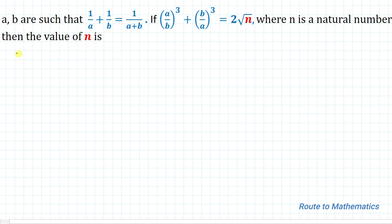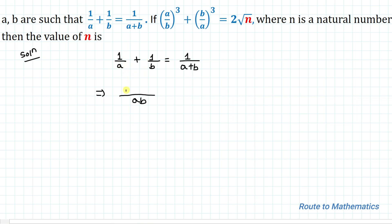So we are asked to find the value of n from the given equation. Without any delay, let's start the solution. We have our first equation: 1/a + 1/b = 1/(a+b). In the next step we are going to take LCM, so after cross multiplication what we get is a + b = 1/(a+b).